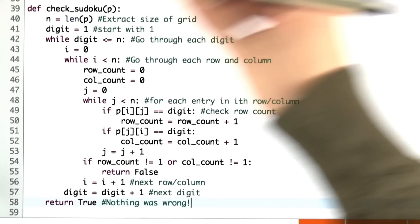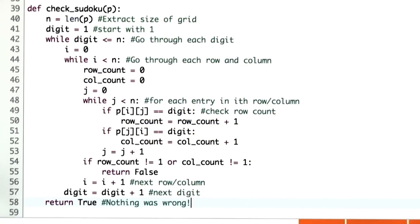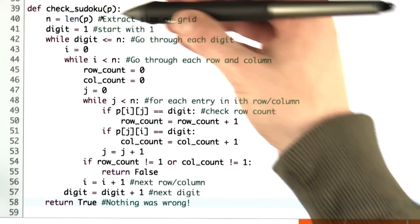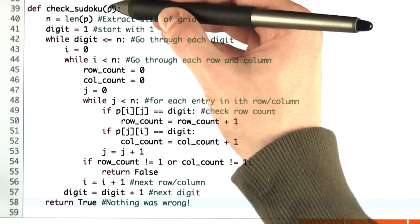Let's code this up. So here's the finished code for this problem. First, we extract the size of the grid by looking simply at the length of the list p.